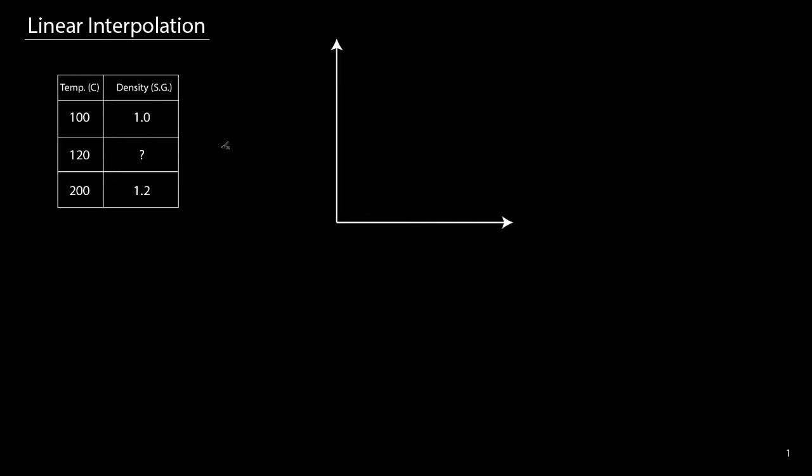In this video we'll be talking about linear interpolation. Linear interpolation is a strategy that is employed when you are looking at physical property data and the tables that you're looking at do not have the number that you are interested in.